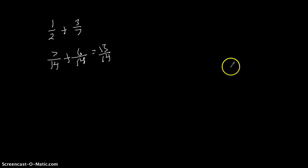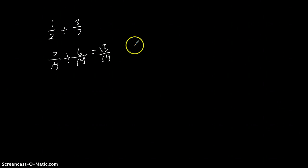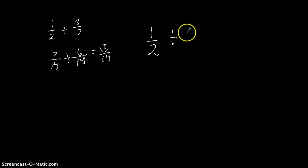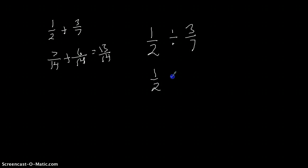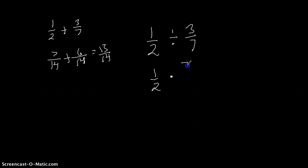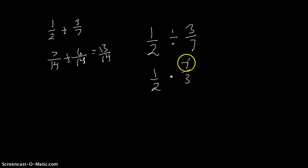So I'm going to do an example problem using these same two fractions. I'm going to write one-half divided by three-sevenths. The only thing we have to do is change the division sign to multiply — I'll use a dot for the multiplication symbol — and then take the reciprocal of three-sevenths. So instead of three-sevenths we're going to say seven-thirds. Then we just multiply: one times seven equals seven, and two times three equals six.